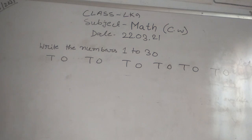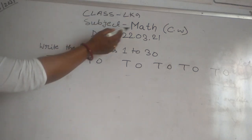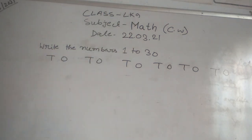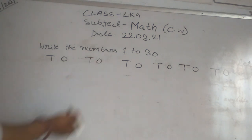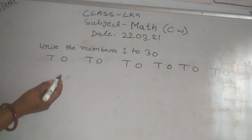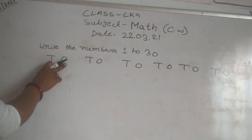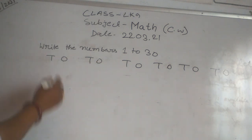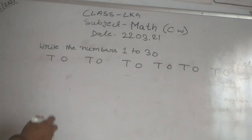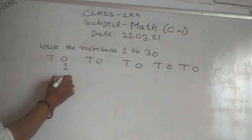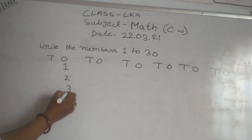Today we are going to class APG, subject Math, class of 2nd March 2021. Write the numbers 1 to 30. If we want to write the numbers 1 to 30.